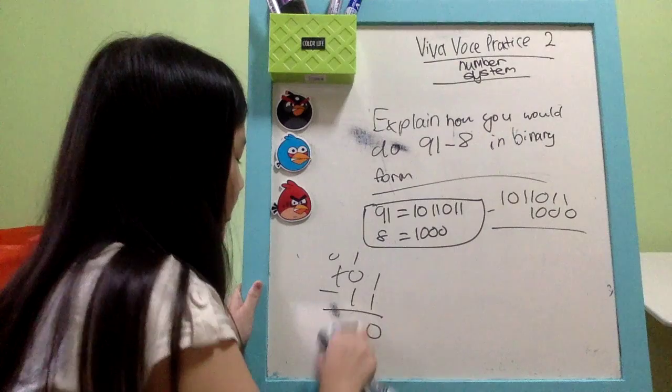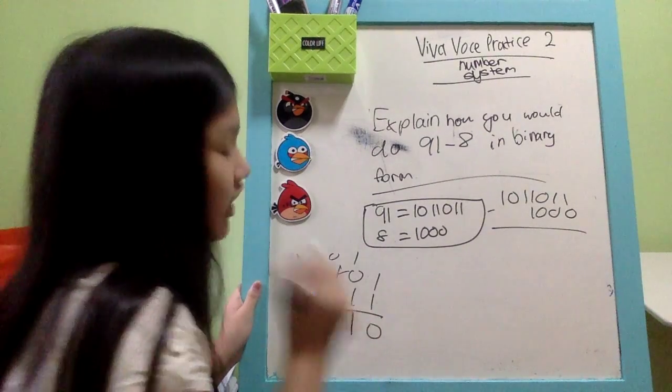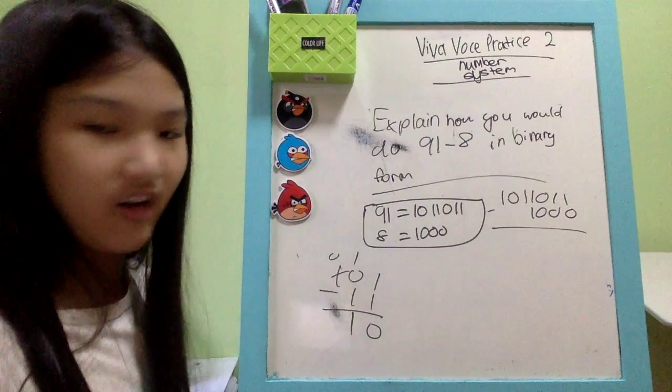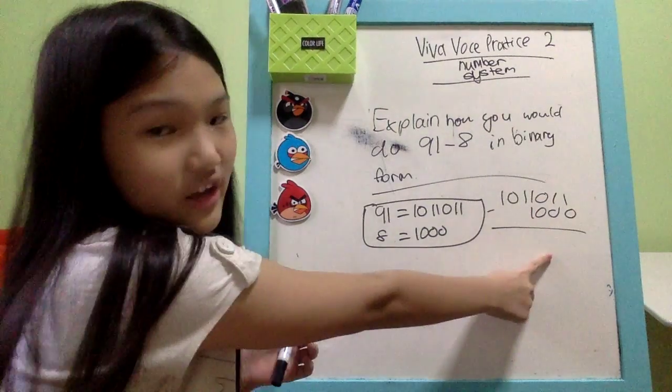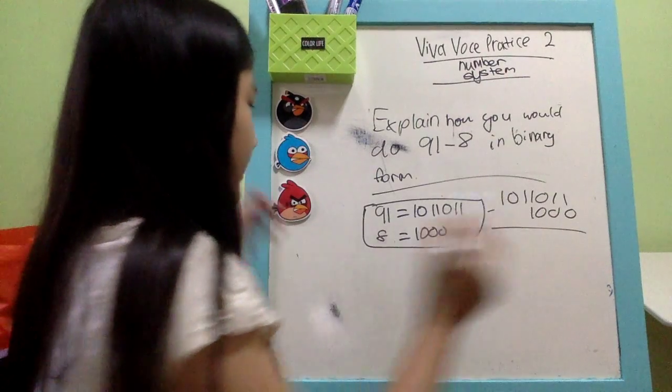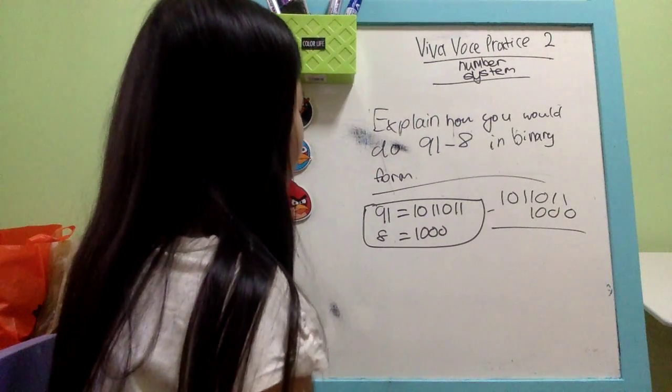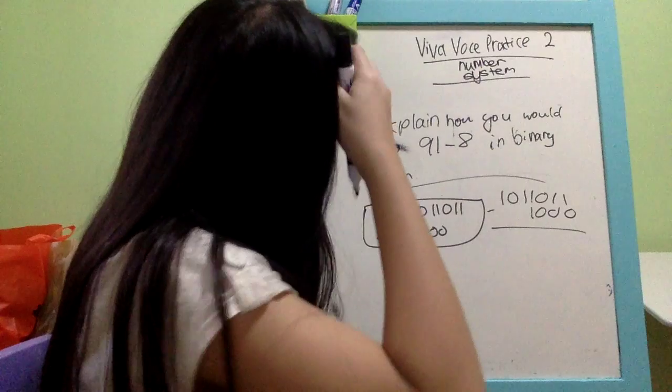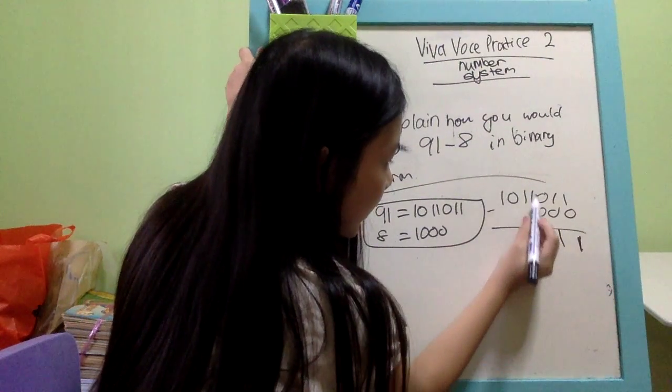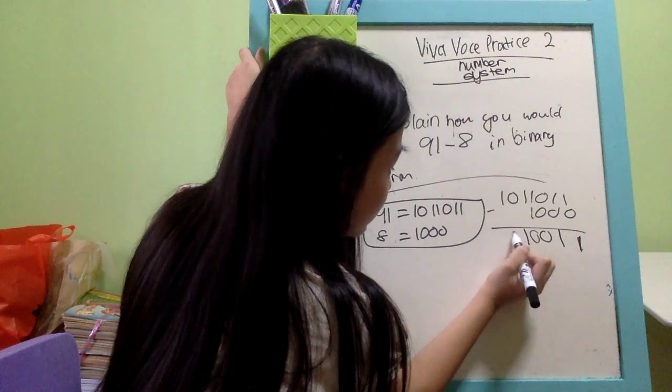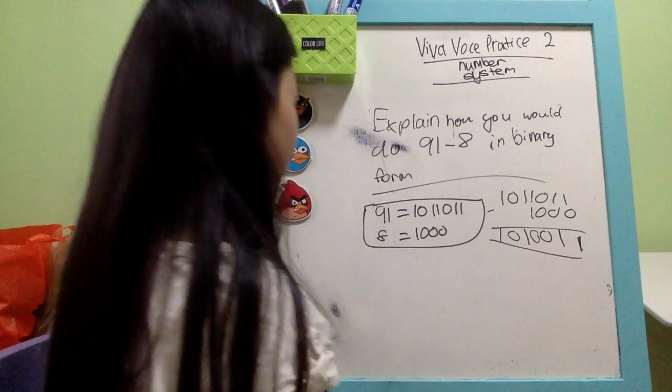Alright, so let's move back to here and so you just minus off like that. Okay, this one minus zero is one. Zero. One. Alright, so